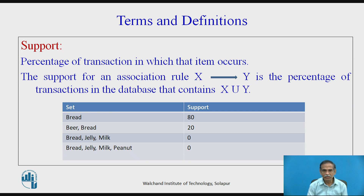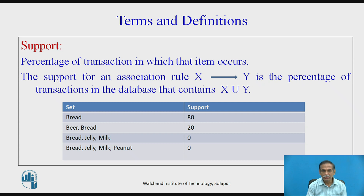We have two terms associated with association rules. First is support, which is the percentage of transactions in which that item occurs. The support of a rule 'if X then Y' is the percentage of transactions in the database that contain both X and Y (i.e., X ∪ Y). For example, bread appears in four transactions, so its support is 80%. Beer and bread occur in only one transaction, so support is 20%. Bread, jelly and milk do not co-occur in any transaction, so their support is 0.